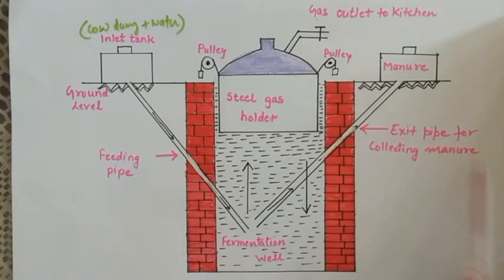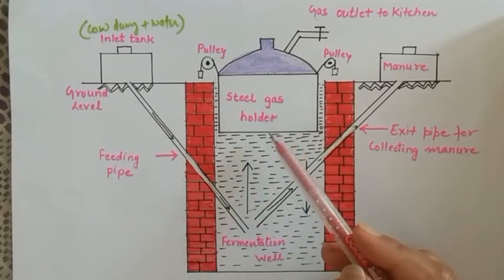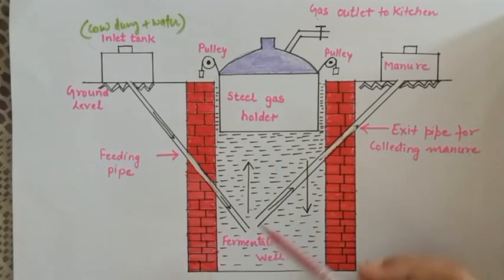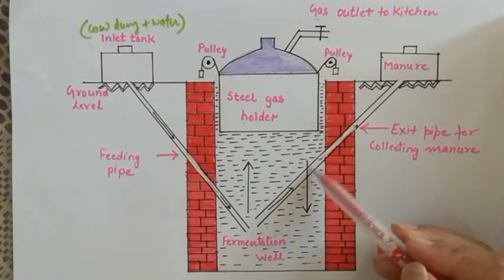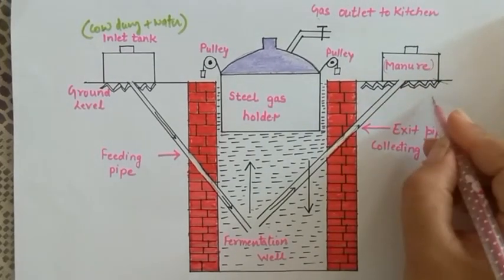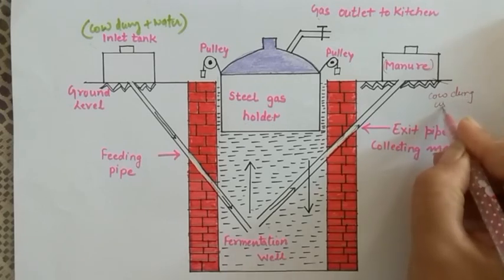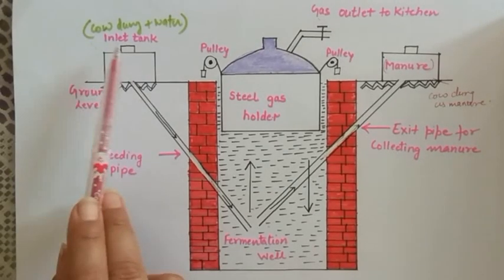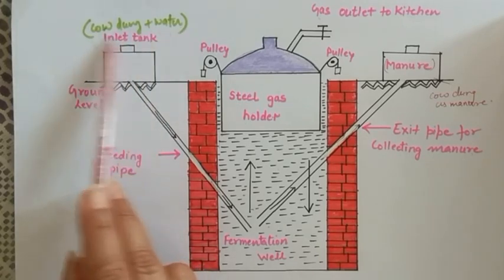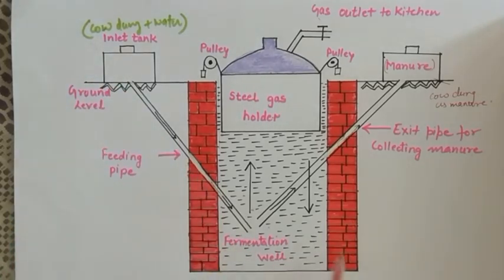As pressure of the gas increases, it forces the spent cow dung through a pipe to collect in the manure tank, where that cow dung can be used as manure. Simply put: the slurry — mixture of dung (गोबर) and water — is introduced here; the brick tank is made underground, and air supply is absent inside.